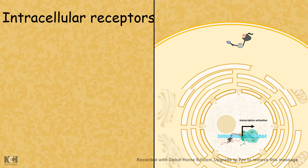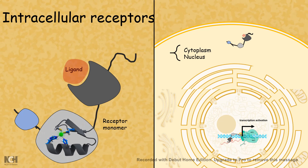As the name suggests, intracellular receptors are present in the intracellular site, either in the cytoplasm or in the nucleus. They have unique structural features which we would be discussing in this video, along with their functions. The unique feature about nuclear receptors is they have intrinsic transcription factor activity.